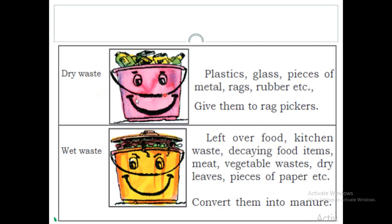So dry waste you have understood. Wet waste means: leftover food, kitchen waste, decaying food items, meat, vegetable waste, dry leaves, pieces of paper. These wastes can be converted into manure. Manure is the material which is used to fertilize the soil.